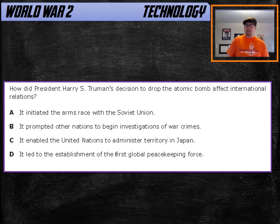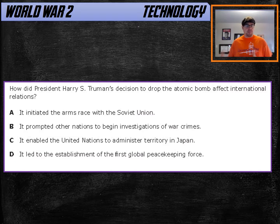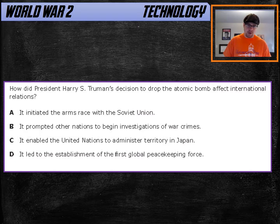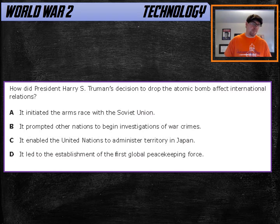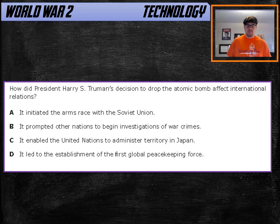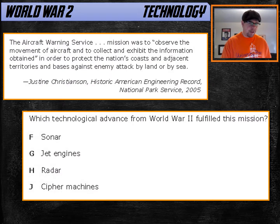The question here is: how did President Truman's decision to drop the bomb affect international relations? It's really simple — it basically kicks off the Cold War. The right answer is A: it initiated the arms race with the Soviet Union. This question more appropriately belongs to our look at the Cold War, but the key point is: the end of World War Two leads to the beginning of the Cold War and the arms race with the Soviet Union.